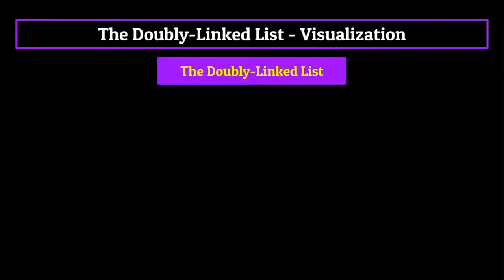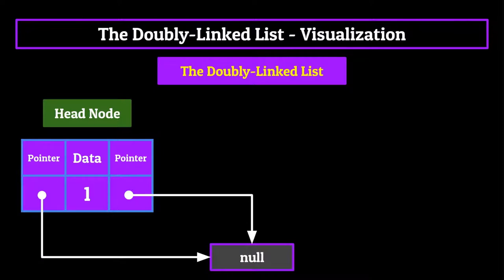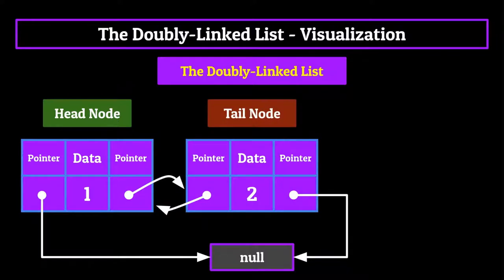Now just like a linked list, every doubly linked list is going to start with a head node. Since it's the first node in the list, both its previous pointer and its next pointer will point towards a null value. This is because it can't point to information which isn't there. We can fix this by adding another node. Once we do, the head node's next pointer now points towards this new node instead of null, the new node's previous pointer points to the head node, and the new node's next pointer points towards null.